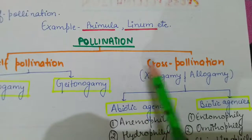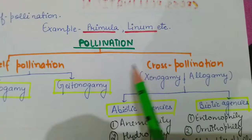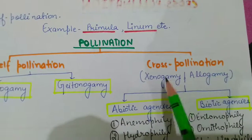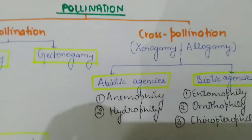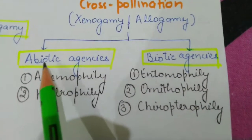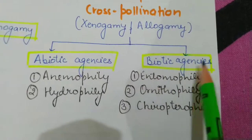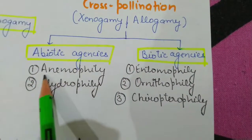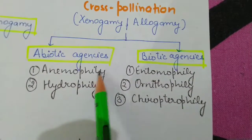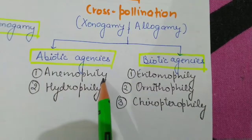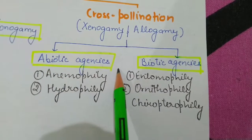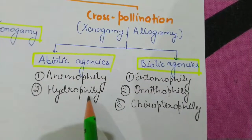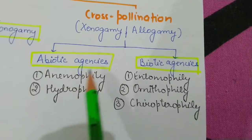For cross pollination to occur, a transfer of pollen grain from anther to stigma of another flower requires some agency. There are two types of agencies: abiotic (non-living) and biotic (living). Abiotic agencies include anemophily, which is wind pollination, and hydrophily, which is water pollination.